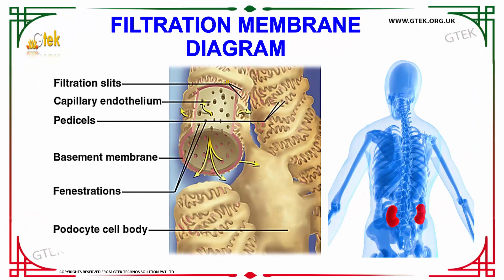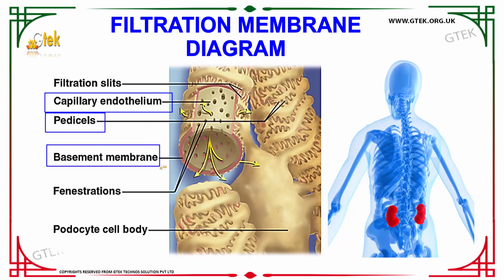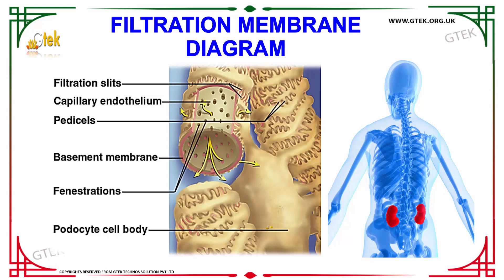Next we are going to study about the filtration membrane. In the filtration membrane diagram, you can find filtration slits and the capillary endothelium, which has small holes. Next we have the pedicels, and there is a basement membrane marked in pink. The holes are known as fenestrations, and then we have the podocyte cell body. These are the parts of the filtration membrane.